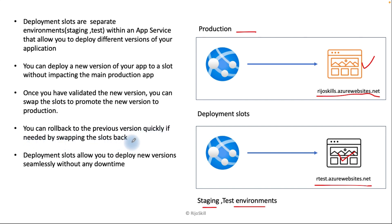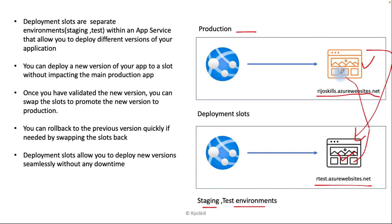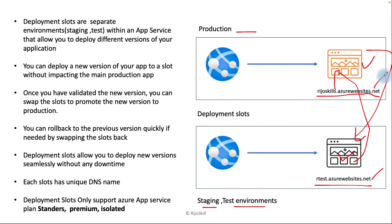You can also roll back to a previous version if needed by swapping the slot back. If you face any problem after swapping from staging to production, you can easily roll back — returning the previous production copy back into the production slot. Each slot has a unique DNS name, and deployment slots are only supported for Standard, Premium, and Isolated App Service plans.